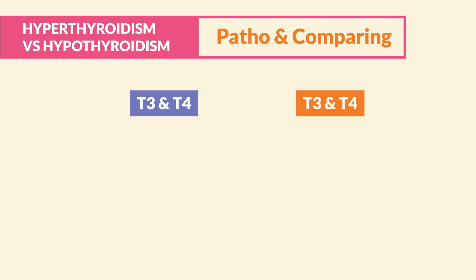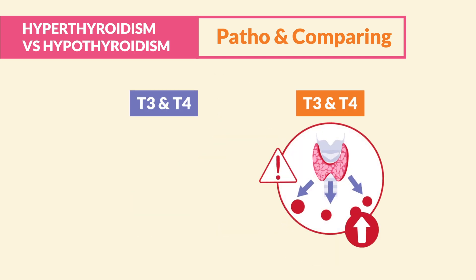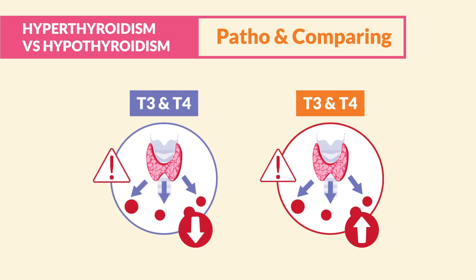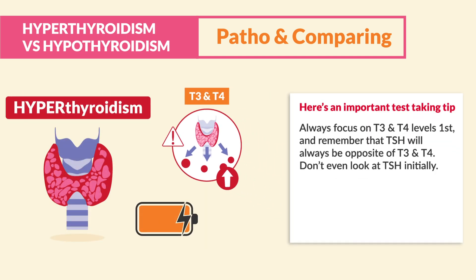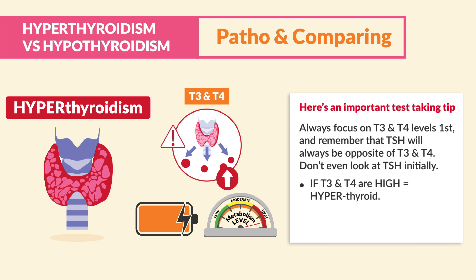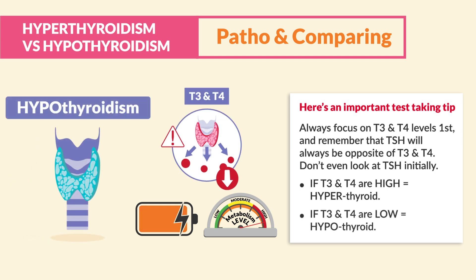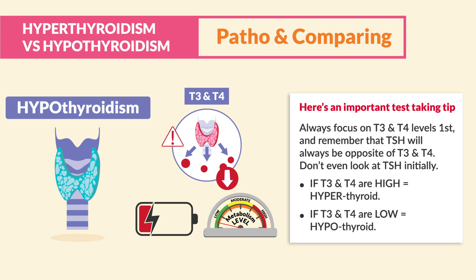If T3 and T4 levels are too high or too low, we have a big problem. For hyperthyroidism, think high energy and high metabolism caused by high T3 and T4. On the other side, for hypothyroidism, simply think low for hypo — low energy and slow metabolism caused by low T3 and T4.